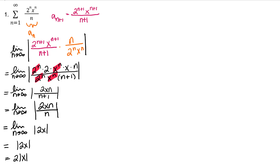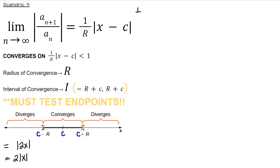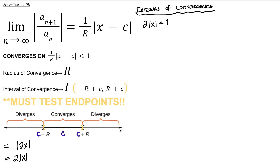That means the ratio test gave us the value 2|x|, meaning we will be able to find an interval of convergence, because it is in the form (1/r)|x − C|. To determine the interval of convergence, I'll make 2|x| < 1 and solve for x. So our interval of convergence goes from −1/2 to 1/2.